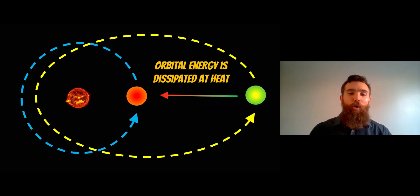The orbital energy from the elliptical orbit moving to a more circular one is dissipated as heat inside the object. As the orbit becomes more circular, the object becomes hotter, which drives volcanic activity.